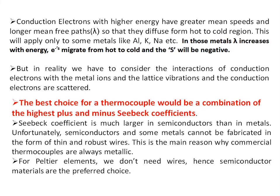Conduction electrons with higher energies have greater mean speeds and longer mean free paths, so they diffuse from the hot to the cold region. This applies to metals like aluminum, potassium, and sodium, where the mean free path λ increases with energy — electrons migrate from hot to cold and S is negative. In metals where the mean free path λ decreases with energy, electrons migrate from cold to hot and S is positive, as in copper.